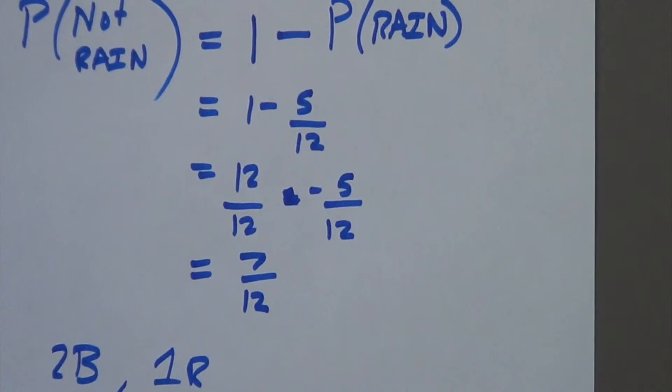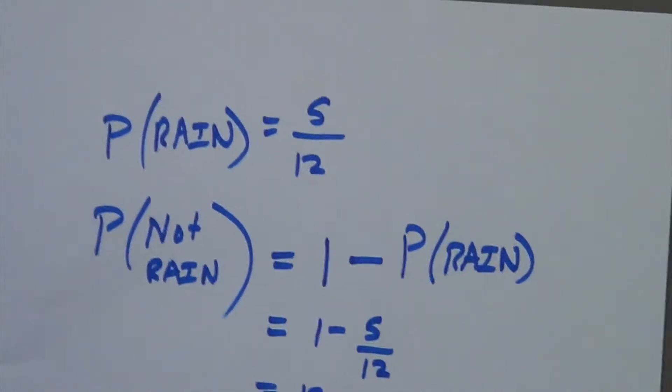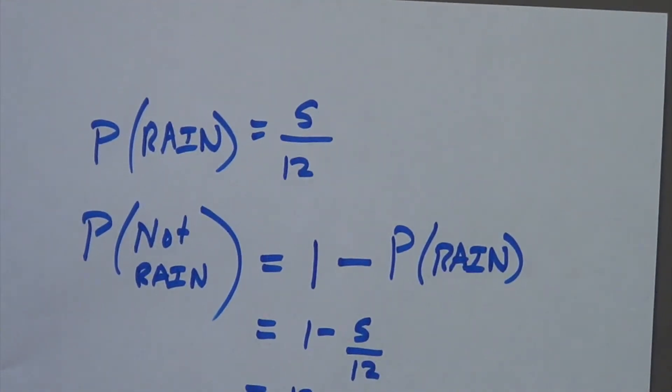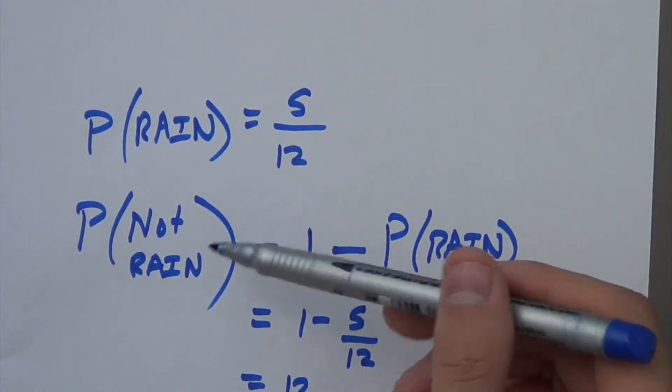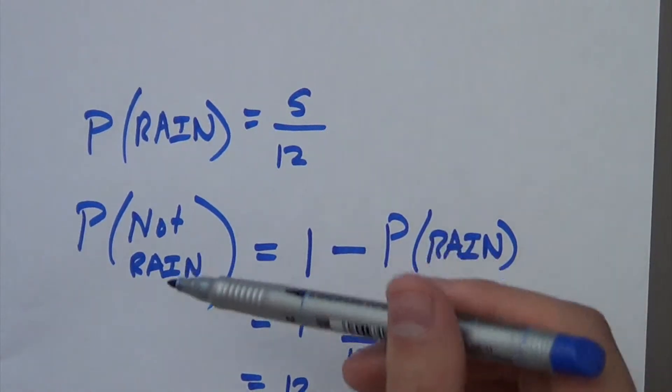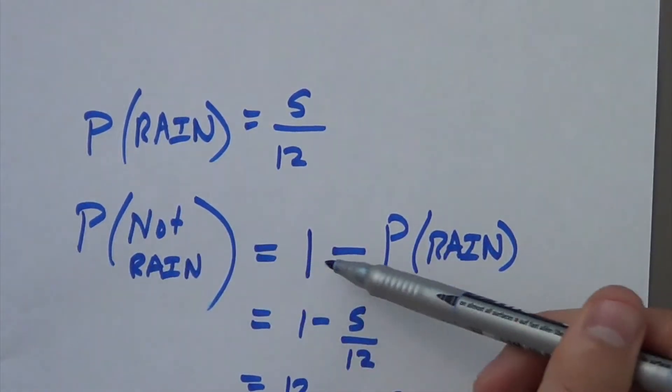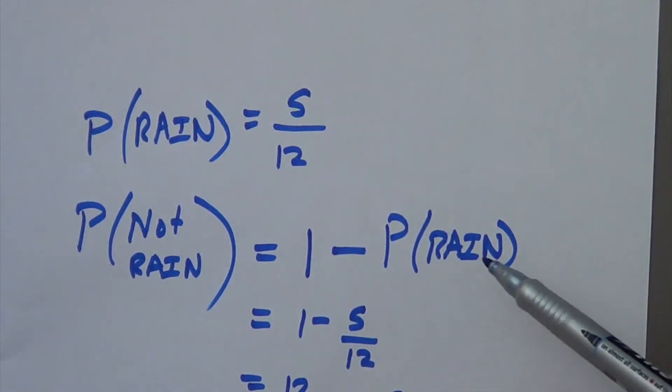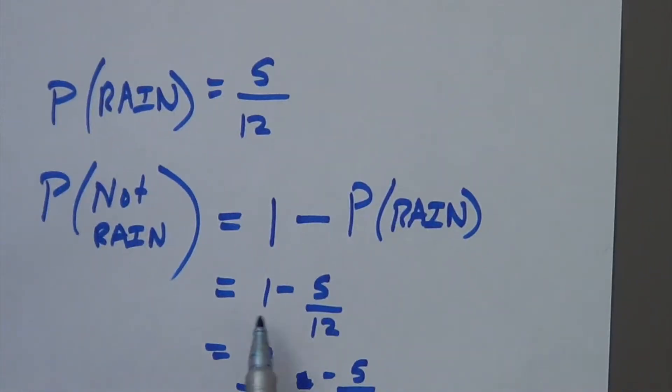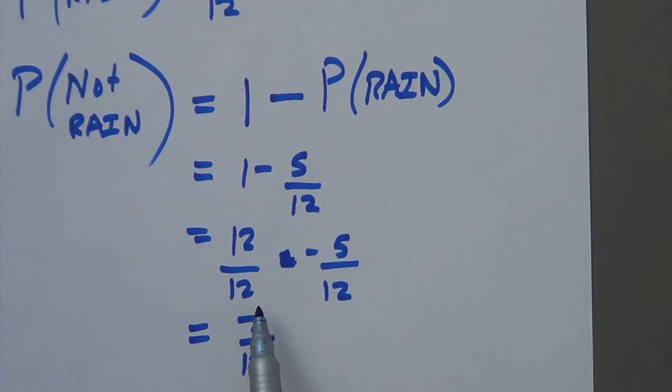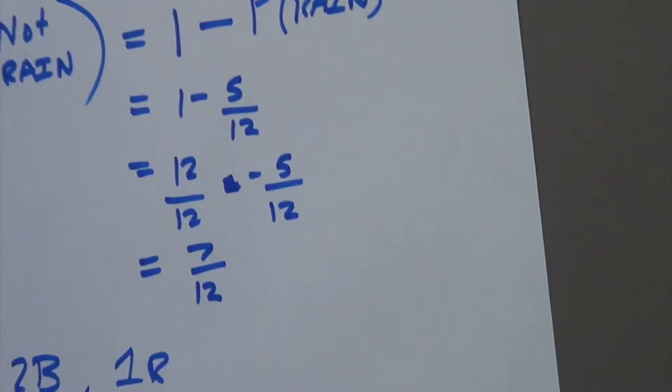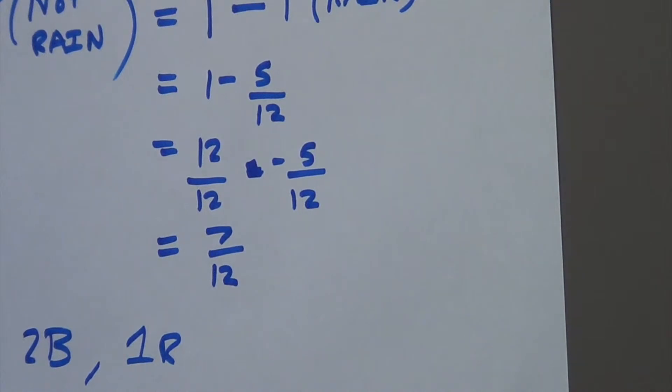Right. Now, in Switzerland, it says that the probability that it will rain on the 1st of September is 5/12. And then it asks us what's the probability that it will not rain. The same principle as the last question, we can do 1 minus the probability that it will rain. So, that's going to be 1 minus 5 over 12, which can be rewritten as 12 over 12 minus 5 over 12, which gives us 7 over 12.